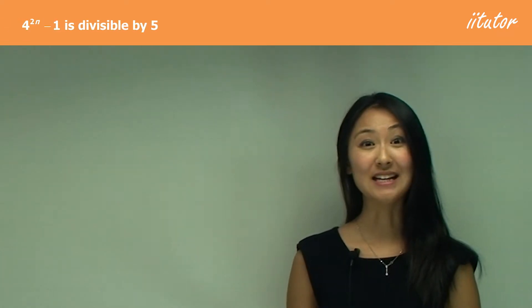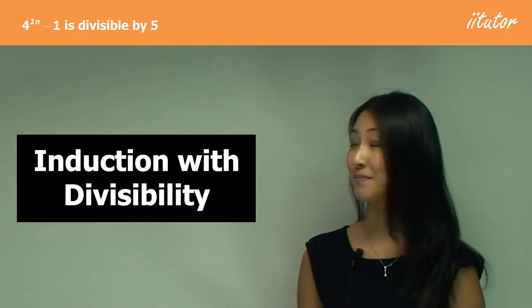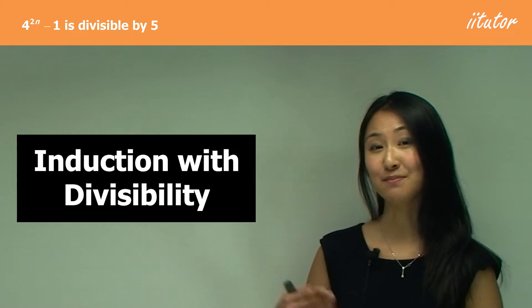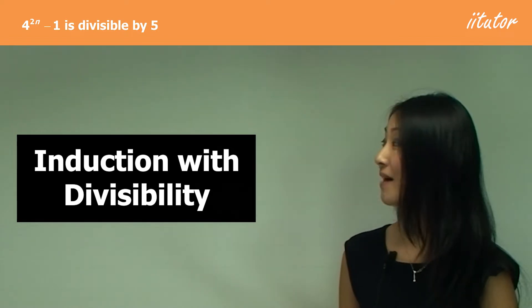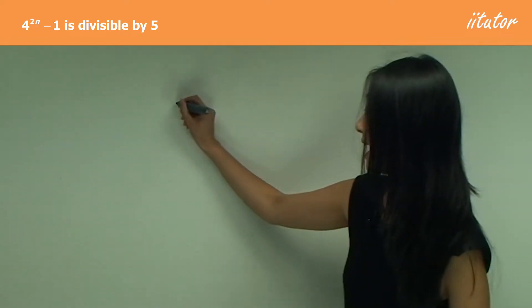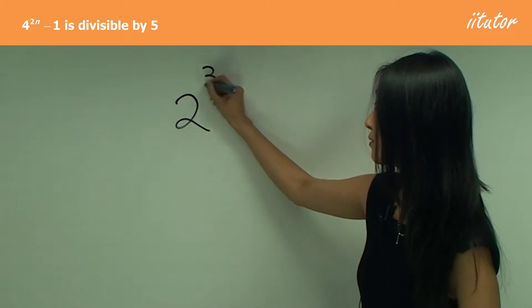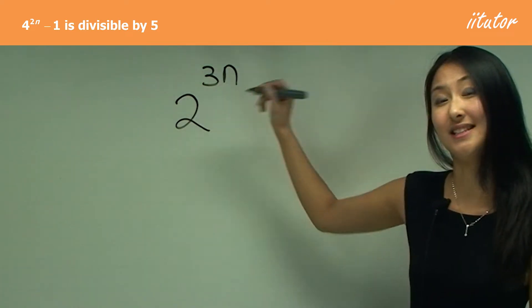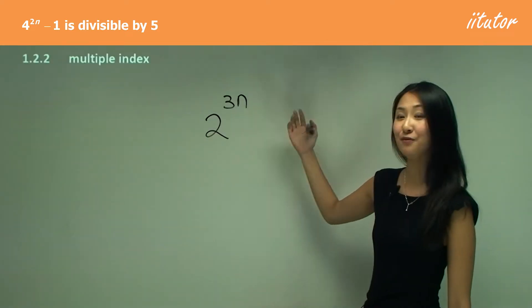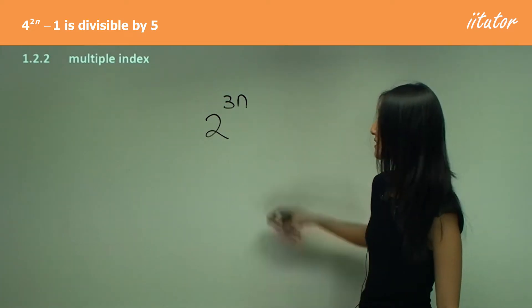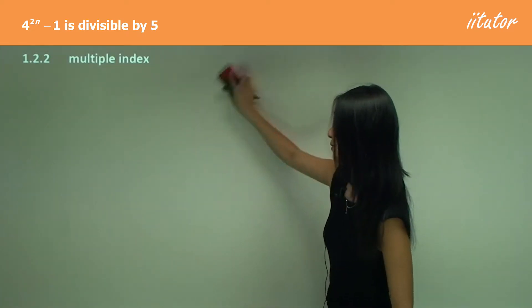What I want to teach you now is induction with divisibility with questions that have multiple indices, and what I mean by that is we have, for example, 2 to the power of 3n rather than just n. So we have 2 to the power of 3n or 4n, etc. We're just going to learn how that affects the question.